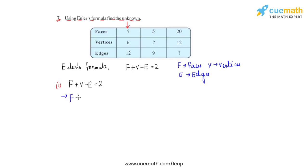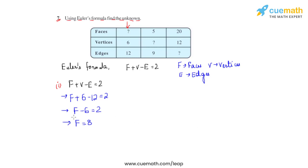So f is f, v is 6, e is 12, and this is equal to 2. If we solve the left hand side we get f minus 6 is equal to 2, and f is equal to 8. So in the first column we can conclude that the number of faces would be 8.